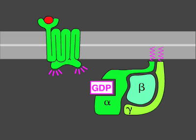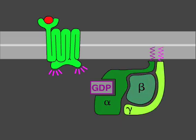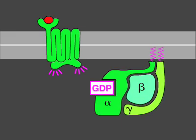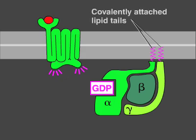As the name implies, a trimeric G-protein is composed of three protein subunits, called alpha, beta, and gamma. Both the alpha and gamma subunits have covalently attached lipid tails that help anchor the G-protein in the plasma membrane.